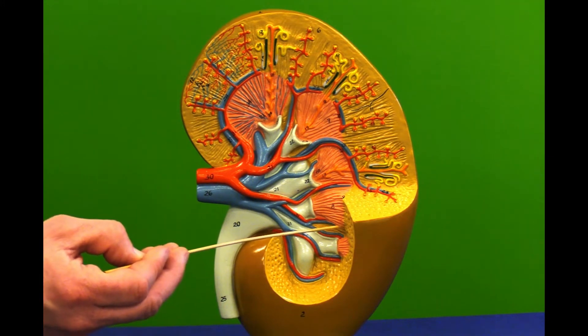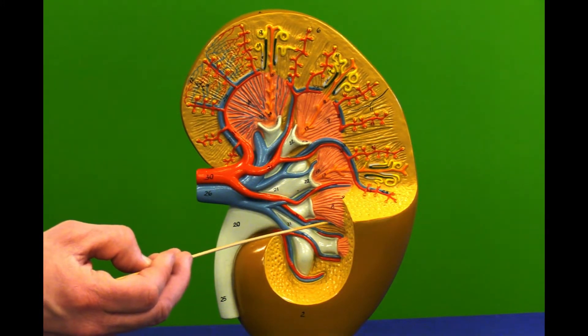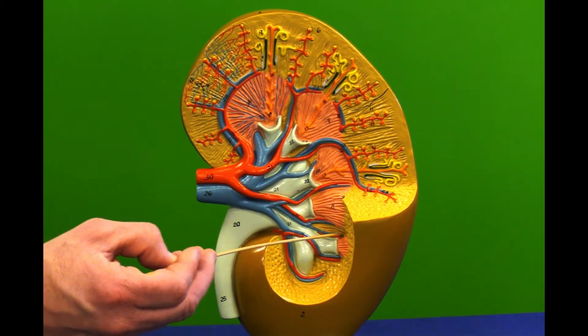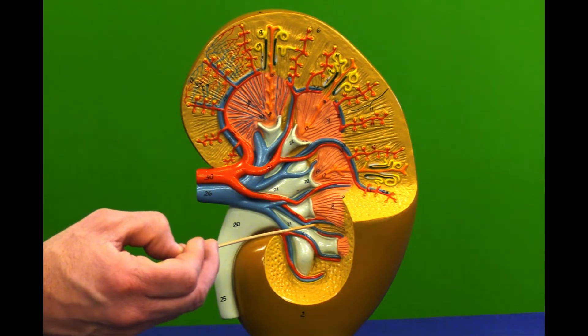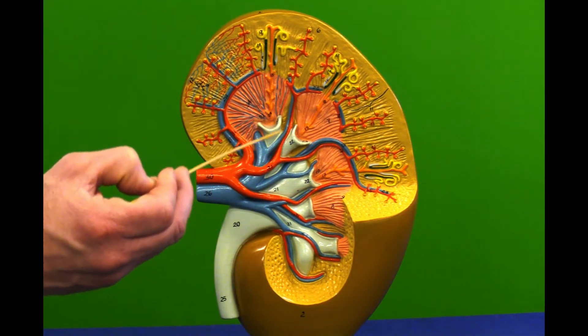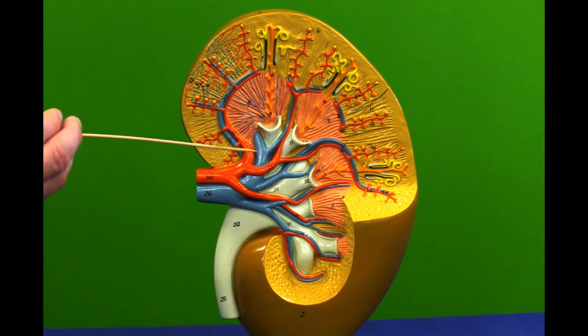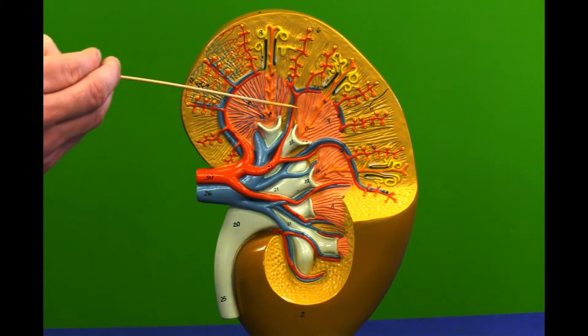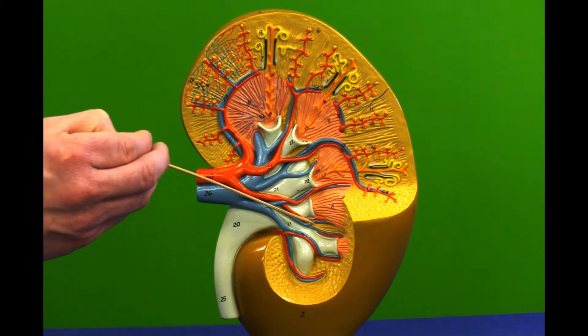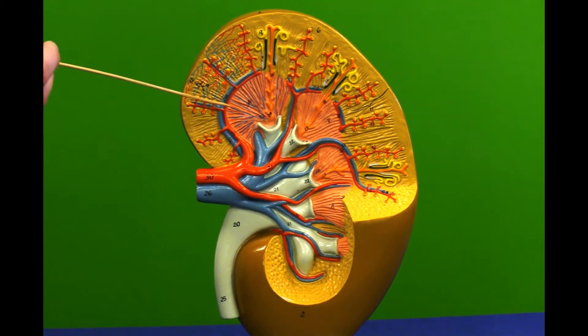Now in between each pyramid we can see a little bit of the structure here known as a renal column separating all the pyramids, and we can see the arteries and veins that run through the renal columns separating them out.